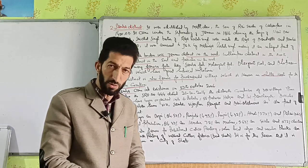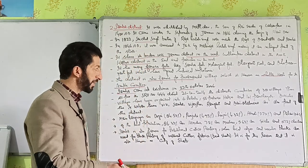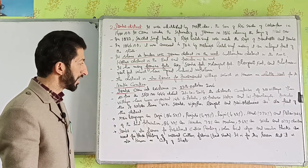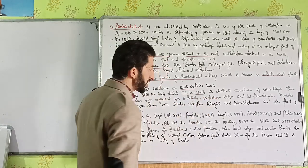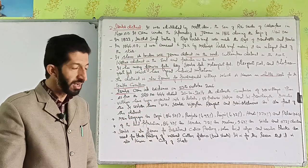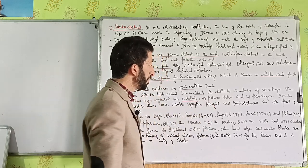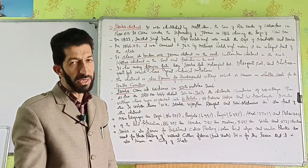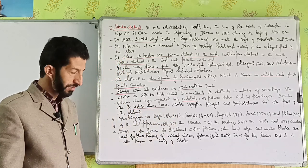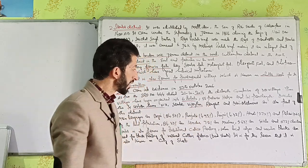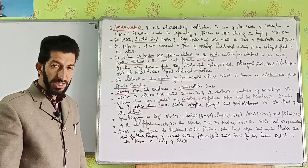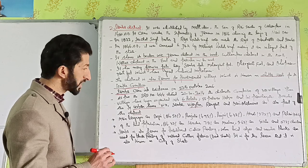The district comprises 381 villages organized into 655 Patwara halkas and 101 panchayats. Besides, four urban towns - Samba, Vijaypur, Ramgarh, and Bari Brahmana - are also part of this district.